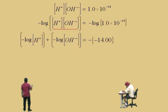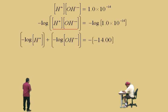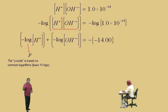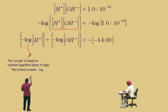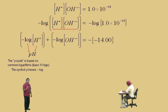Now, let's talk about the p-scale. The p-scale is used generally when you have small numbers. The negative log is represented by the symbol p — this gives us what we call the p-scale, and it is based on the common logarithm, or log base 10. So the symbol p actually means negative log. When you see p, you think negative log. What we're going to do now is let the hydrogen ion concentration be represented by H, so pH actually means the negative log of the hydrogen ion concentration. That's what pH is — it's on the p-scale.